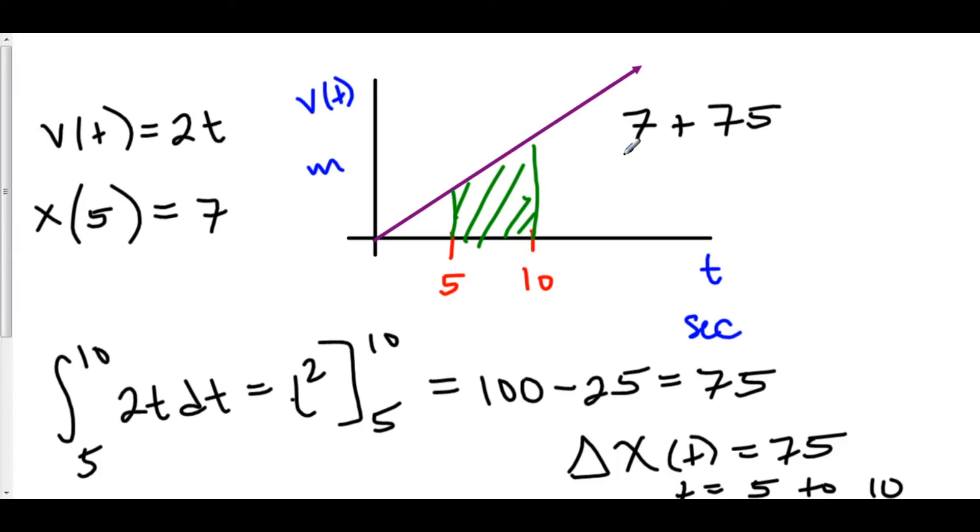In other words, my position at time 5, that's x of 5, plus the change in position from time 5 to 10, that was given by the integral from 5 to 10 of velocity, and this would tell me what the position at time 10 is.